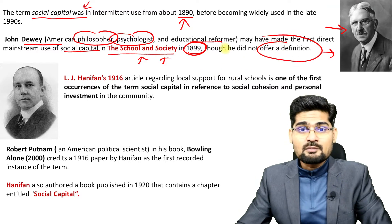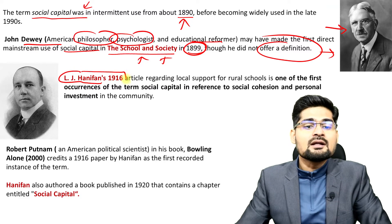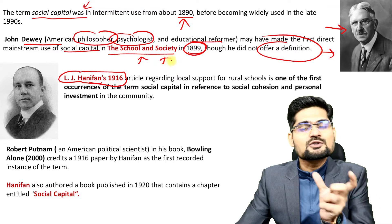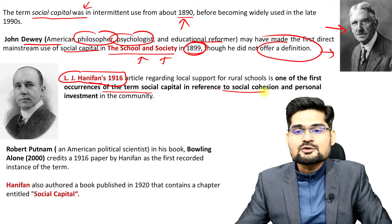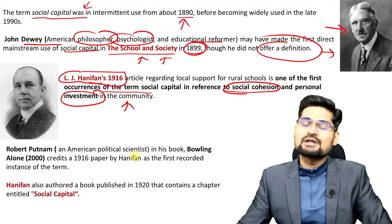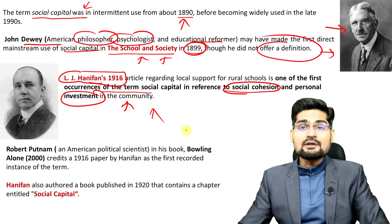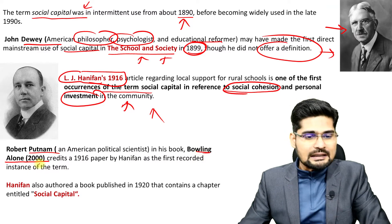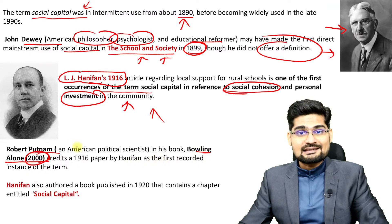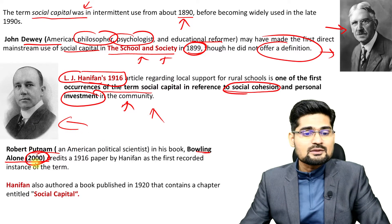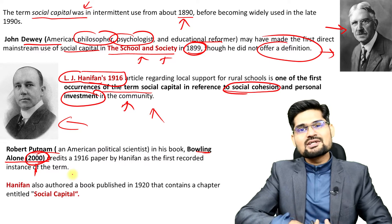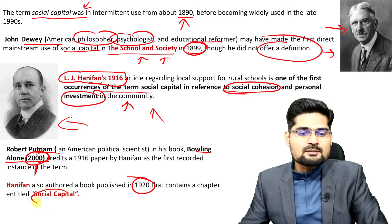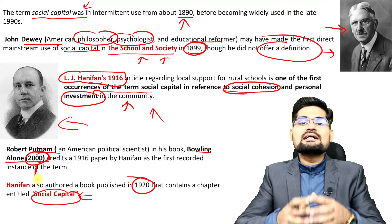Where did the definition come from? From the works of L.J. Hanifan in 1916. Hanifan used this word social capital in one of the first clear occurrences — a reference to social cohesion and personal investment in community. We know this from Robert Putnam, who in his book 'Bowling Alone' in 2000 gave references and credits to this great scholar Hanifan. That's how this concept travels from the 19th century through the 20th century to the 21st century. In 1920, Hanifan published a book called 'Social Capital' itself, where it was formally described and understood.